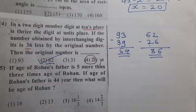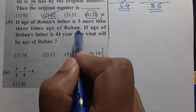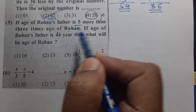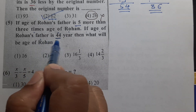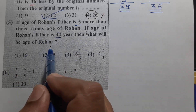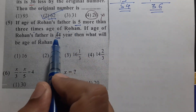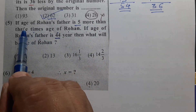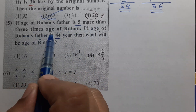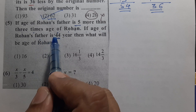Question number 5: Rohan's father's age is 5 more than 3 times the age of Rohan. If the father's age is 44 years, what is Rohan's age? The condition is: father's age equals 3 times Rohan's age plus 5.